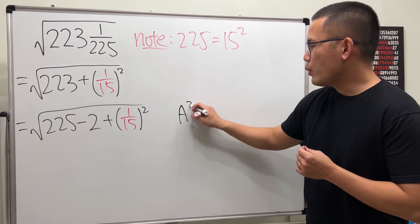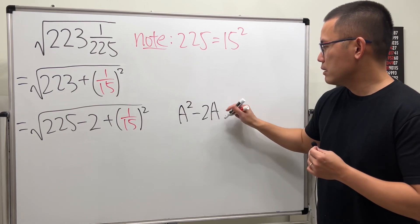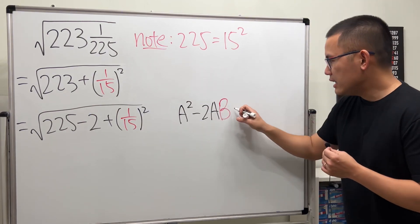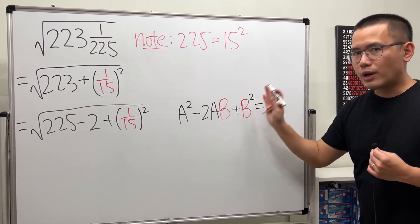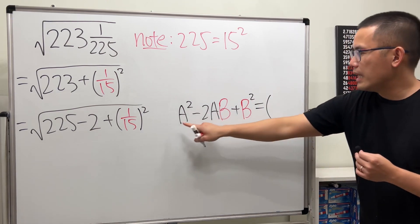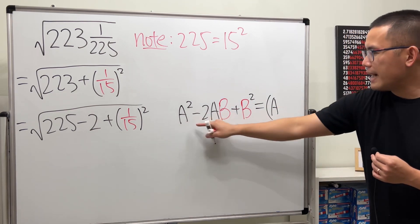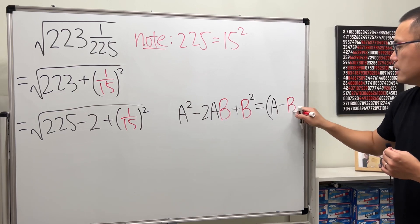If we have a squared minus 2ab. And then, at the end, if we have plus b squared. This right here can be factored in, and we get a minus b squared.